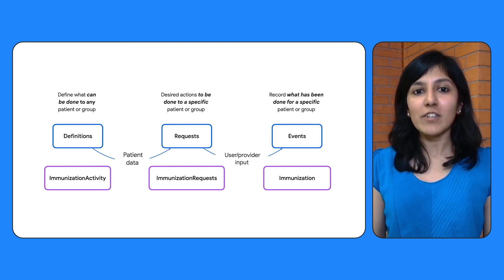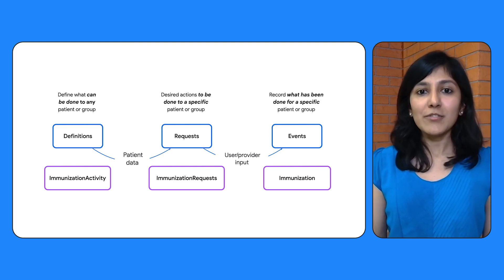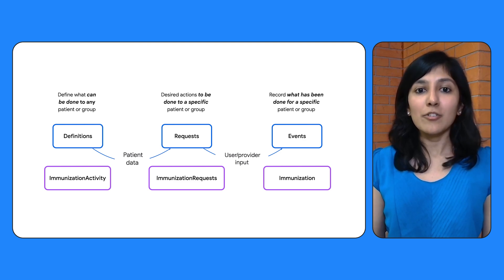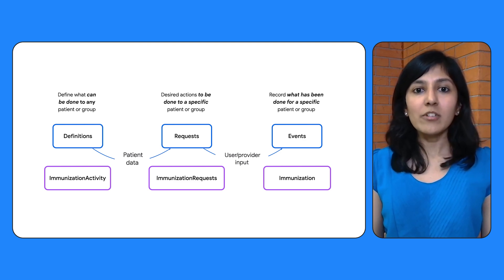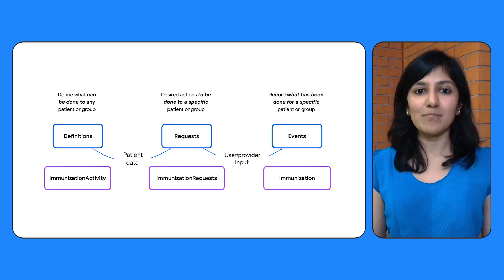There are states defined at each phase of the life cycle that track the progress of the activity. The states typically available are draft, active, on hold, entered in error, revoked, and completed. Please note that there may be exceptions — some resources may support fewer or more states. As you can see, the correct handling of relevant resources in the activity flow is complex and intricate. Luckily, the Activity API handles setting the correct states and references between these resources.